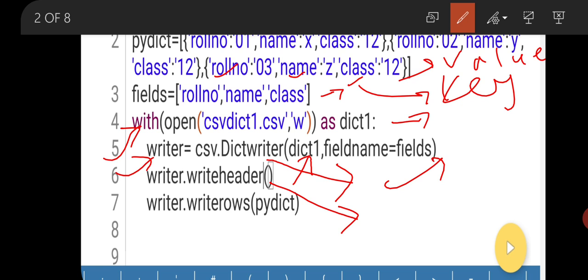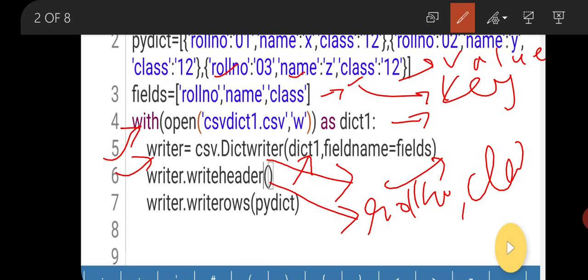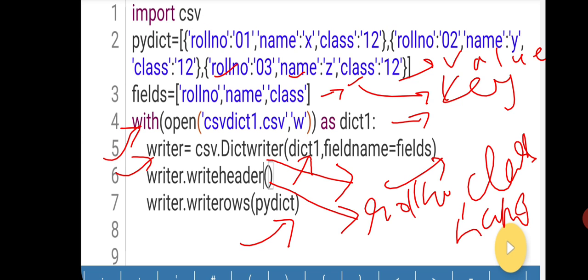For example, the headers are row number, name, and class. In the last line, writer.writerow — here we pass the dictionary variable. This will write the data in dictionary format. This is all the code for writing data in the form of key-value pairs as a dictionary.